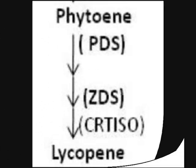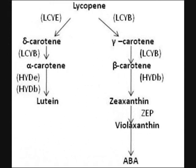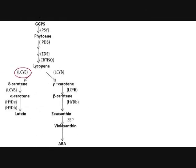The lycopene is cyclized by the epsilon or beta cyclase to give yellow-orange pigments called beta-carotene and alpha-carotene. The gene responsible for the formation of beta-carotene is the LCYB gene and the gene responsible for alpha-carotene is the LCYE gene.